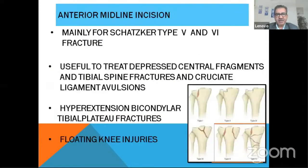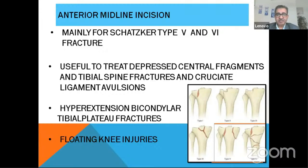Through this approach, open reduction has also been performed. The main indications I would be discussing are: Schatzker type 5 and 6 fractures without significant posterior involvement, depressed central fragments, tibial spine fractures, cruciate ligament avulsions, hyperextension bicondylar tibial plateau fractures — probably the best approach for these — and floating knee injuries as a relative indication.